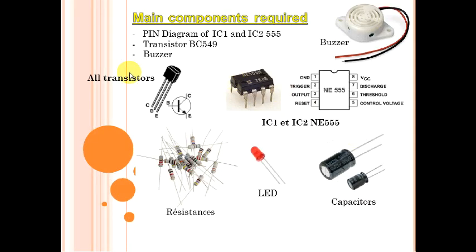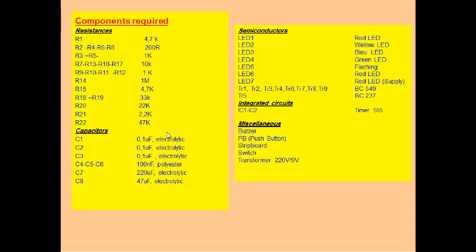In this slide, we can see the main components required: the IC1, IC2, the NE555. All the transistors are NPN transistors, and we have the buzzer, the capacitor, the LEDs, and the resistances. This is the list of the components required for the whole circuit. You can stop the video and write them down.